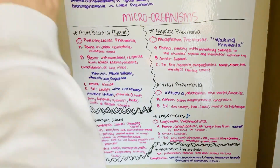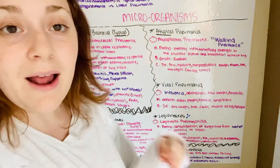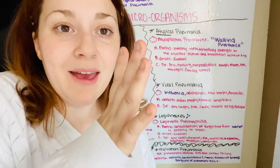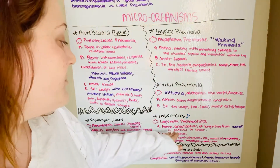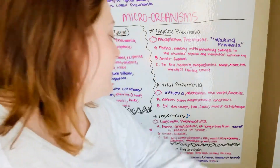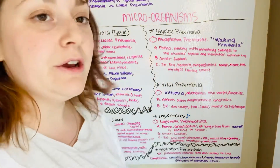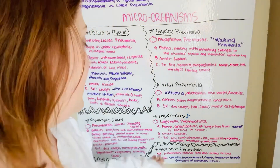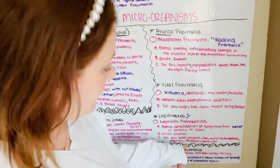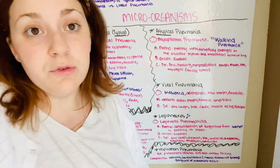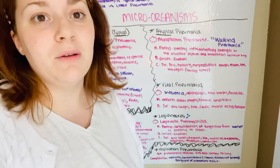My next favorite one — I pronounce it French: Legionnaire's. This is caused by the microorganism Legionella pneumophilia. Remember 'philic/philia' — it's from water. I always think Perrier water. So: Legionella, water. The pathophysiology is consolidation of lung tissue — replacing air with something else, from water. It can be patchy or lobar, and it has a gradual onset. Symptoms: dry cough, dyspnea, headache, malaise, fatigue, decreased appetite, diarrhea, myalgias, and confusion. Think about it — you ingested infectious water, so you're going to have diarrhea.